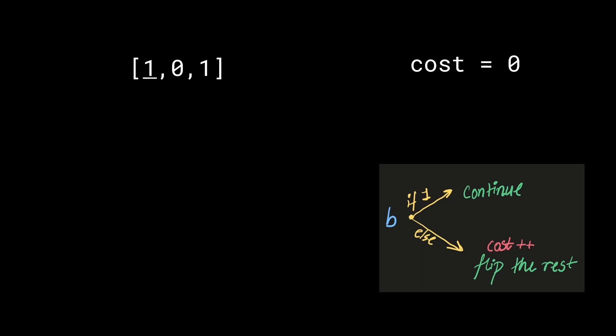Alright, so let's try to simulate and see what happens. So, this is the first element that we get. The first bit is 1, so we'll continue on. Now, in this case, we get the bit as 0. What does this mean? This means that we have to increase the cost by 1 and we have to flip all of the bits on the right-hand side of it, including the current one. So, this 0 becomes 1 and the 1 on the right-hand side of it becomes a 0.